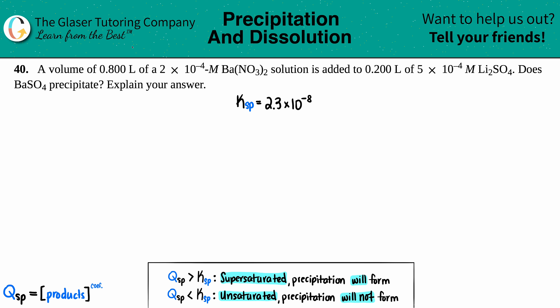Problem 40: A volume of 0.800 liters of a 2×10⁻⁴ molarity barium nitrate Ba(NO₃)₂ solution is added to 0.200 liters of 5×10⁻⁴ molarity lithium sulfate Li₂SO₄. Does barium sulfate BaSO₄ precipitate? Explain your answer.